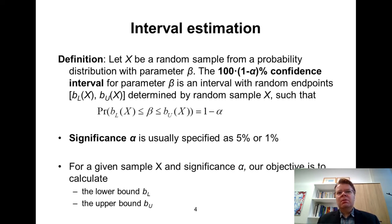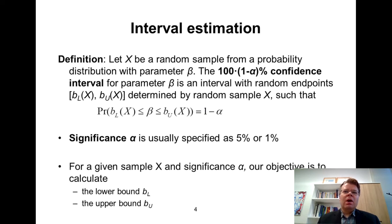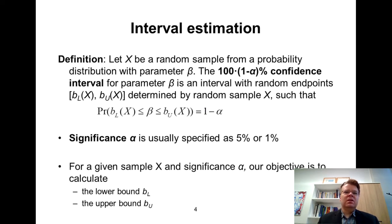The confidence level is 1 minus the significance level. Usually the significance level alpha is specified as something small — typically 5% or even 1%. Therefore the confidence level would be 1 minus alpha, so it would be 95% or even 99%. For example, the standard Excel output includes 95% confidence intervals, meaning the significance level alpha is 5%.